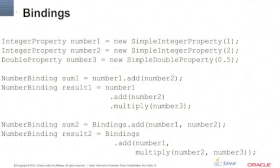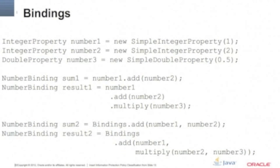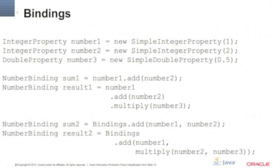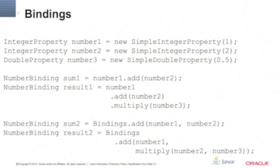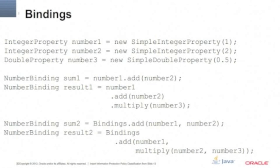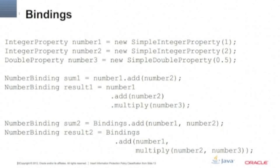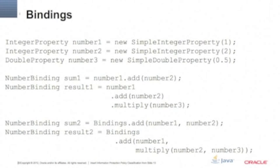You can also play with bindings and calculations. Let's say you want to do some math on conversion between Celsius and Fahrenheit temperature. You can do that automatically with binding between those objects — multiply, add — and you can have an object that represents the calculation. You can have a Fahrenheit property and a Celsius property, and it's all handled automatically. You don't have to keep calculating manually.